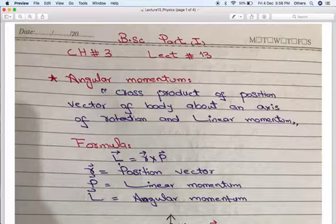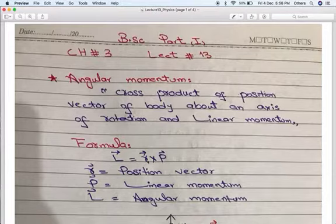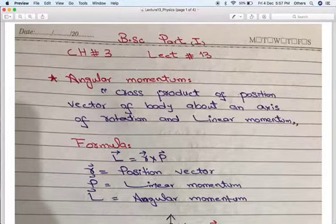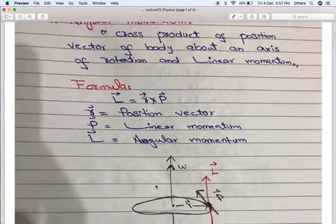Angular momentum is represented by L. The position vector R is a vector quantity. Linear momentum P is also a vector quantity, so their cross product gives a vector quantity represented by L. Here, R is the position vector, P is the linear momentum, and L is the angular momentum.